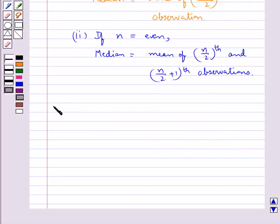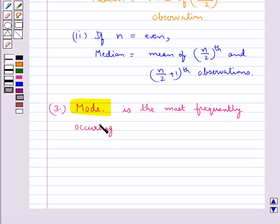Now the next measure of central tendency is mode. Mode is basically the most frequently occurring observation. That is, we can also say that it is an observation with the maximum frequency.